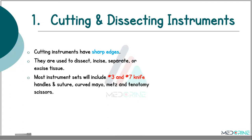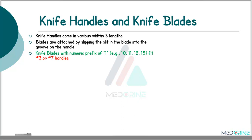Most of the instrument sets in the surgical area will include number 3 and number 7 knife handles, curved Mayo scissors, Metzenbaum scissors also known as Metz scissors, tenotomy scissors and many other scissors.